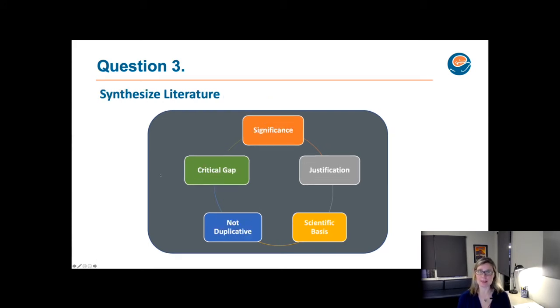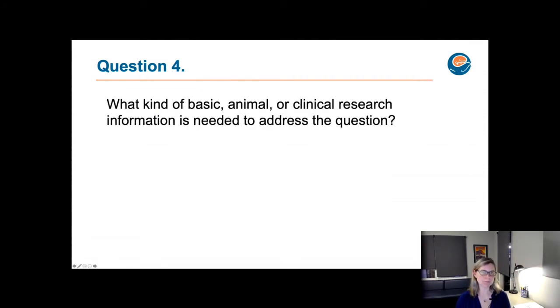So when you do synthesize that, what you end up with is something like this, where you have significance, you know why your topic is important, what the critical gap in knowledge is, the rationale or the justification for doing the work. So make sure that it already hasn't been done. And there's a strong scientific basis for doing it. When we talk about grant reviews, a lot of times we basically boil it down to two things, which is, can they do it? And should they do it? And the should they do it piece of it is really wrapped up here. Is it important? Does it fill a gap in knowledge? Does it have relevance? So you want to make sure that you're taking your lit review to this level, and not just simply understanding the data.